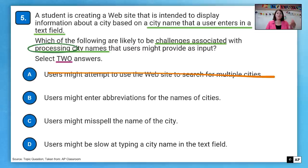And so then here we're looking at they might enter abbreviations, they might misspell the city, and they might be slow at typing. Okay, if they enter abbreviation, that's going to be a problem because we're looking for the city name, not an abbreviation. So that seems to be one of our answers. And then if the user might misspell the city, again, they can type in anything they want. That's a problem. So that looks to be our other choice.